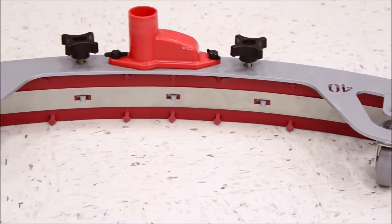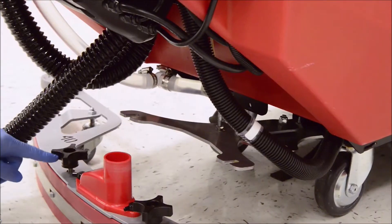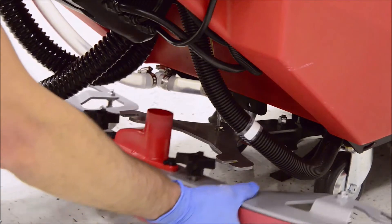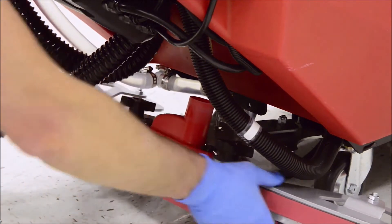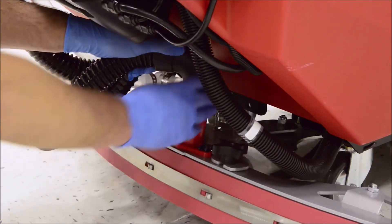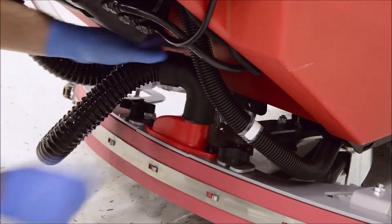Then, install the squeegee assembly on the rear of the machine. To do this, align the knobs on the squeegee assembly to the slots on the squeegee bracket as shown here. Then, hand tighten the knobs until they can't be turned. Finish the installation by attaching the recovery hose to the squeegee assembly.